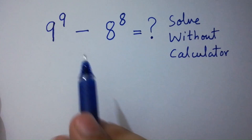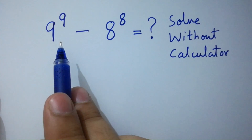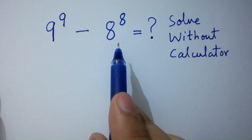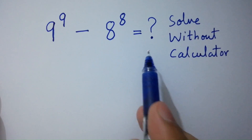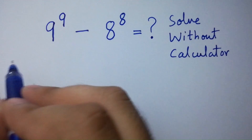Hello friends. 9 to the power 9 minus 8 to the power 8 equals what? Solve without calculator. Let's have a solution.